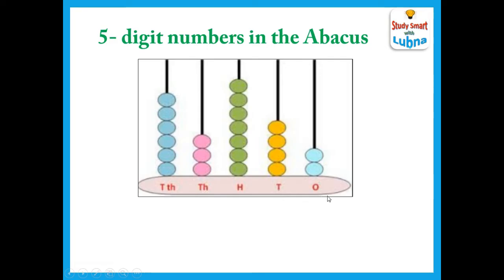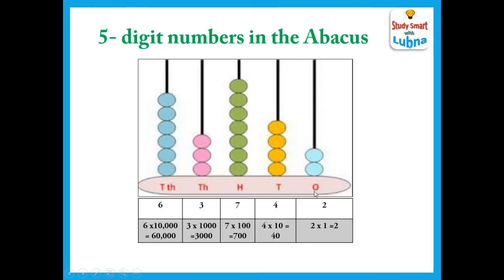Here the place values of the numbers are also given. The first one is ones, then tens, hundreds, thousands and ten thousands. In ones we are having 2 beads, so its place value is 2. In tens we are having 4 beads, so its place value is 40. In hundreds we are having 7 beads, so its place value is 700.